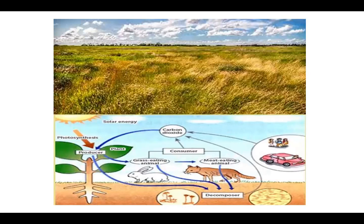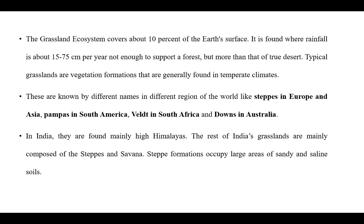The grassland ecosystem covers about 10 percent of the earth's surface. It is found where rainfall is about 15 to 75 centimeters per year — not enough to support a forest, but more than that of a true desert. Typical grasslands are vegetation formations generally found in temperate climates.